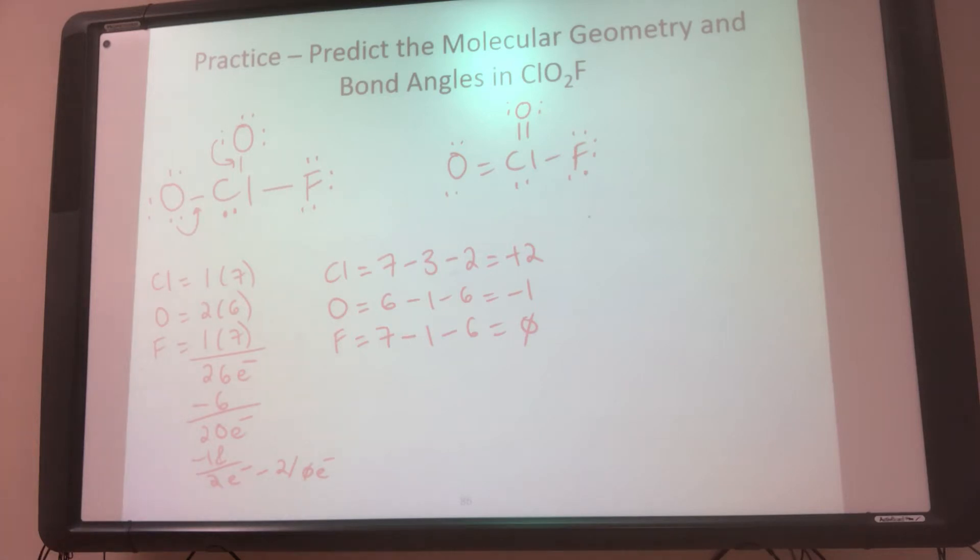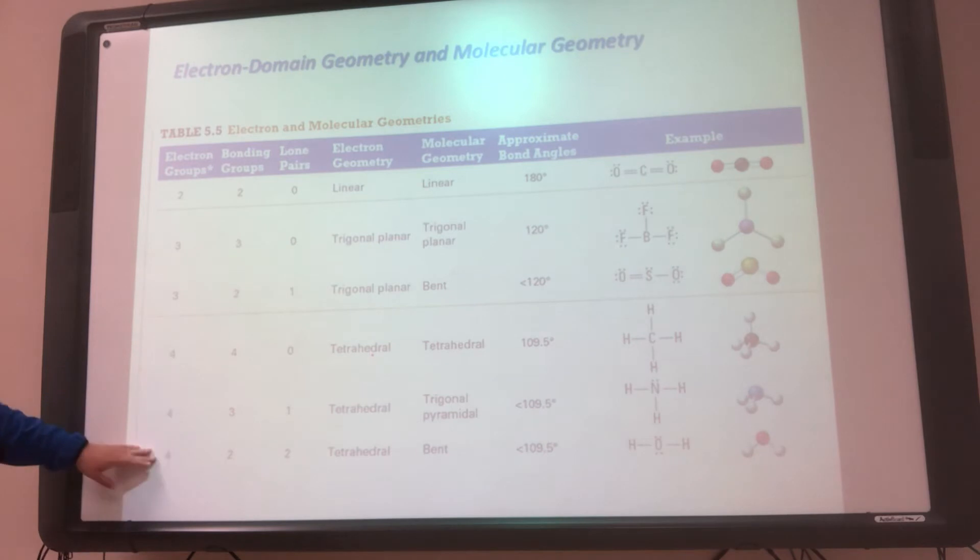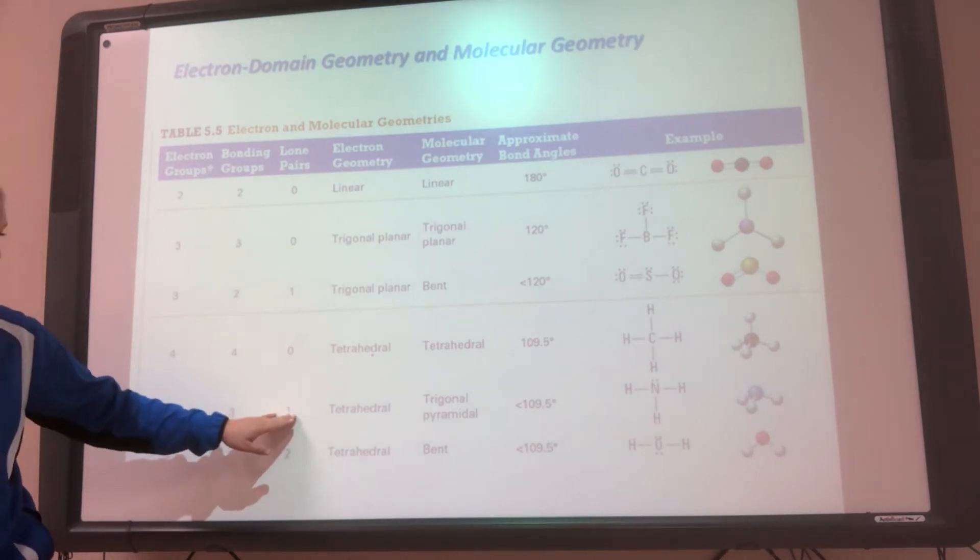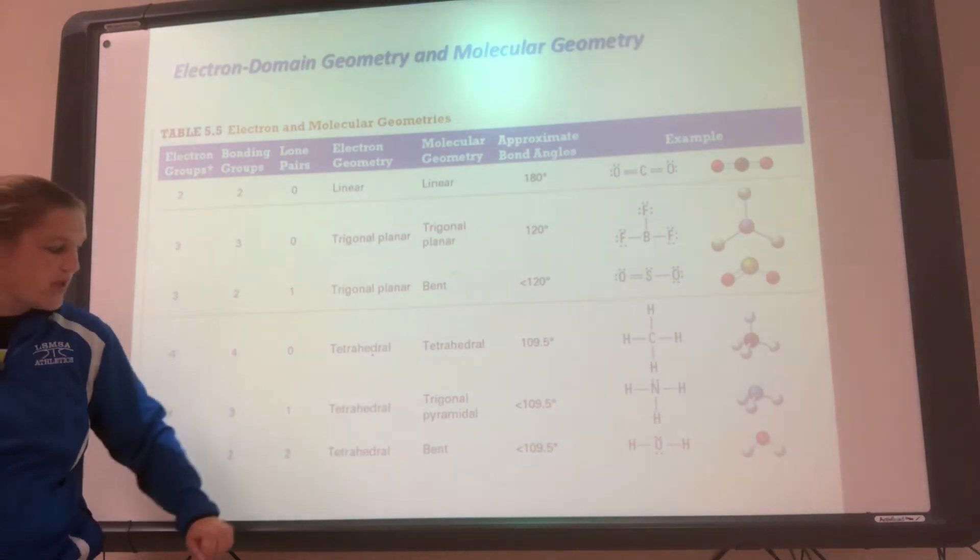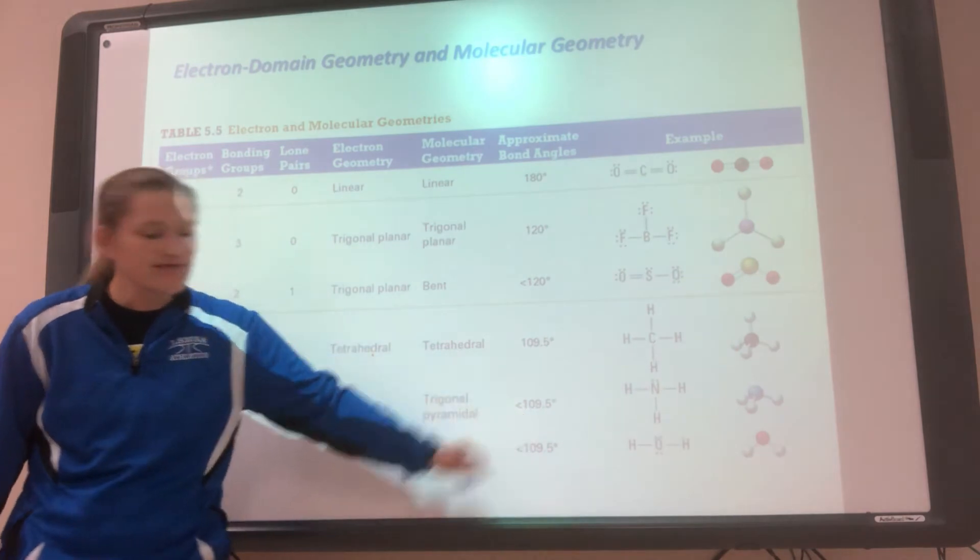And then don't forget those 2 electrons on the central atom. So that would be my final Lewis Dot picture. So now I need to figure out, well, what is it? So I have 1, 2, 3, 4. So I have 4 electron groups. But in that, they're not all bonds. This is 3 bonds and 1 lone pair. So it's a 3, 1. So I could go back to my table and say, okay, it had 4 parent groups. But it was 3 bonds and 1 lone pair, which is trigonal-pyramidal. And since it's a deviation of tetrahedral, it's not exactly 109.5. It's less than 109.5.